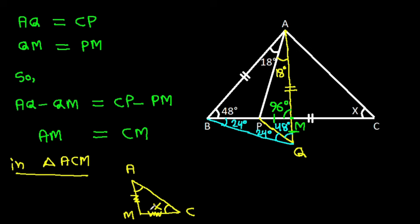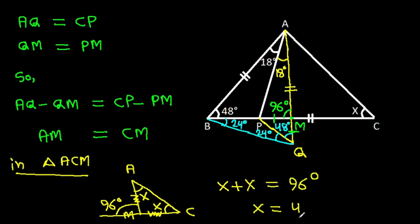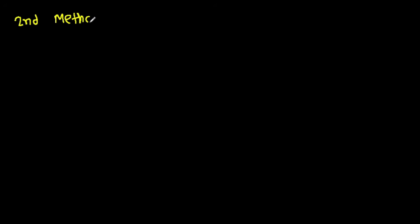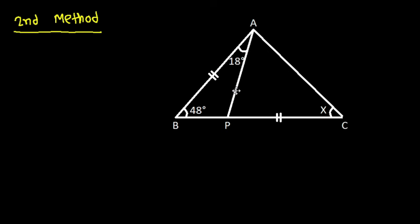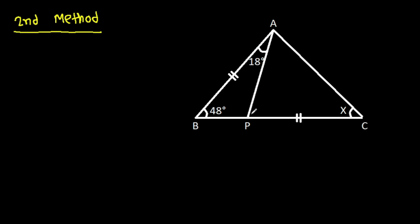This angle is X, so this angle will also be X. And the angle at M is 96 degrees. So X plus X equals 96 degrees, giving X equals 48 degrees. And this angle will be 48 minus 18, that will be 30 degrees... giving us 66 degrees.